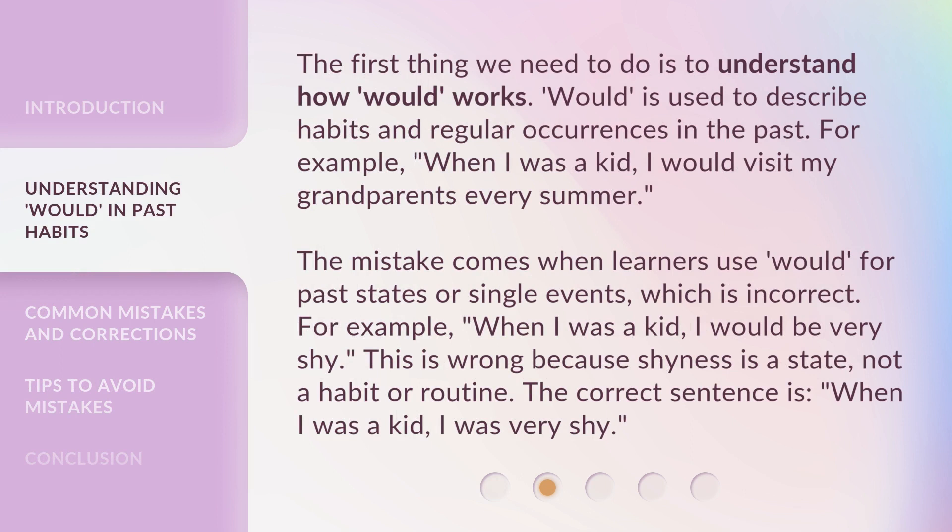The first thing we need to do is understand how 'would' works. 'Would' is used to describe habits and regular occurrences in the past. For example, when I was a kid, I would visit my grandparents every summer. The mistake comes when learners use 'would' for past states or single events, which is incorrect. For example, 'when I was a kid, I would be very shy' is wrong because shyness is a state, not a habit or routine. The correct sentence is: when I was a kid, I was very shy.